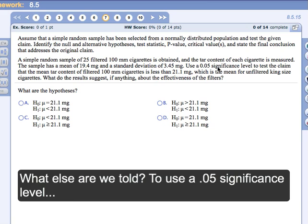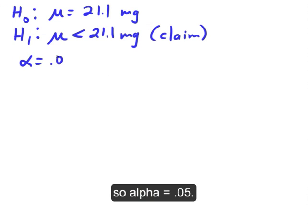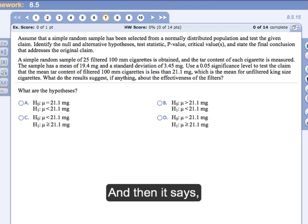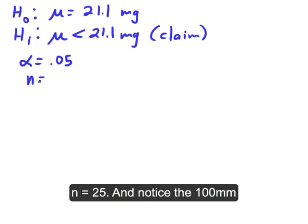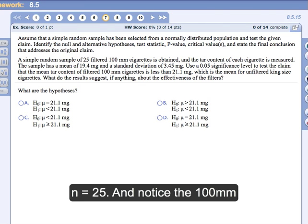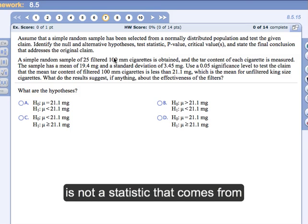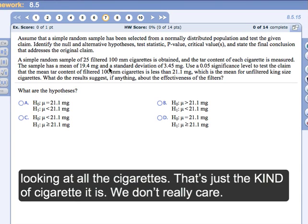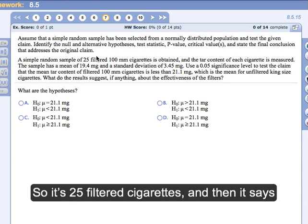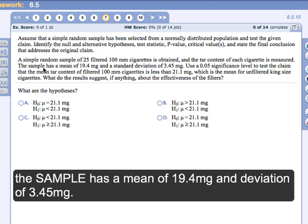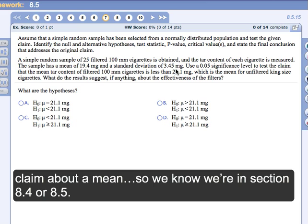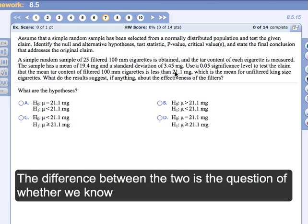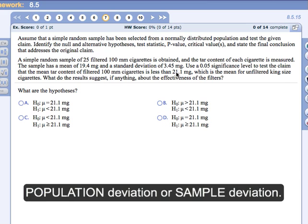What else are we told? We're told to use a 0.05 significance level, so alpha equals 0.05. And then it says we have a simple random sample of 25, so n is 25. Notice the 100 mm cigarettes, that's not a statistic that comes from looking at all the cigarettes. That's just the kind of cigarette it is, so we don't really care.